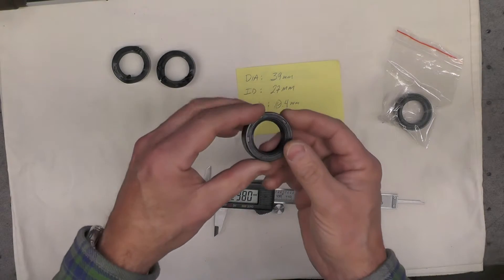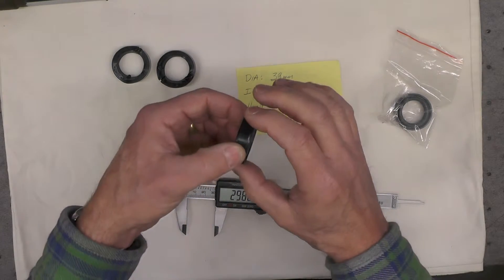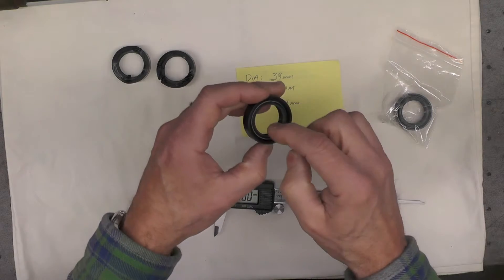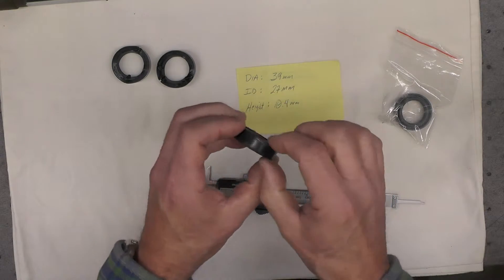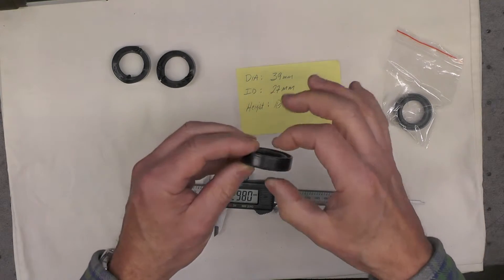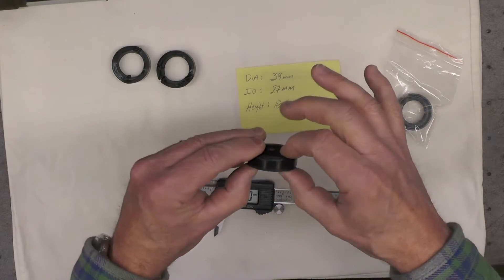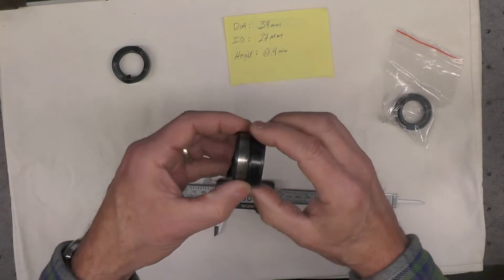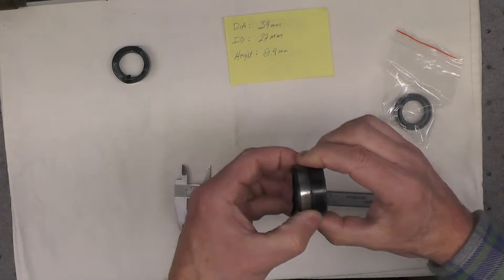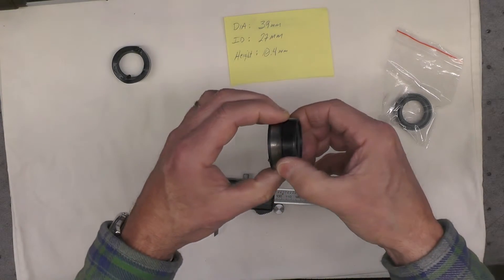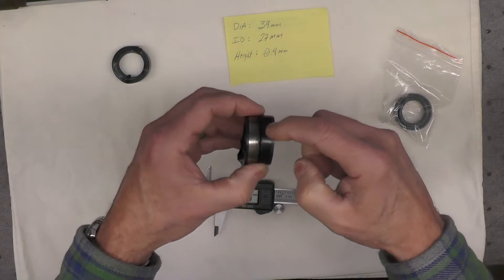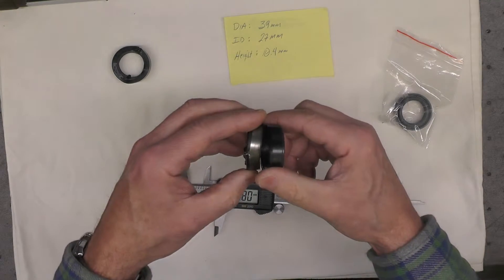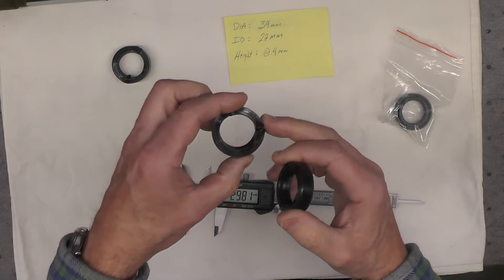This seal measures 39 millimeters outside, 27 millimeter inside, and approximately 10.5 millimeter here, in thickness, in this dimension. And I think it will work. In fact, I'm very sure it will work. The fact that this seal doesn't have the metal band around it doesn't concern me particularly. They got away from this style seal later on anyway.